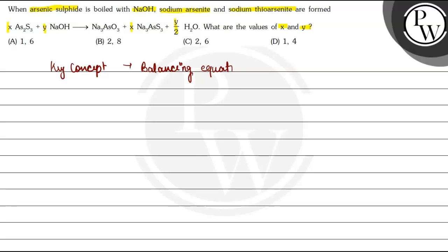So for that, first of all we write down a reaction: X As2S3 plus Y NaOH forms Na3AsO3 plus Na3AsS3 plus (Y/2) H2O.